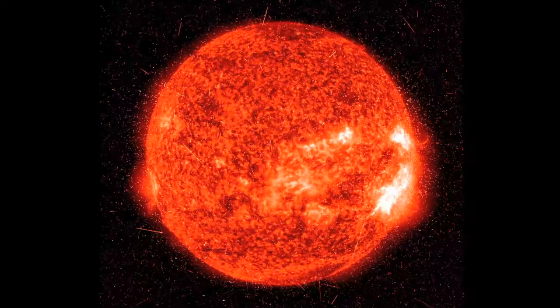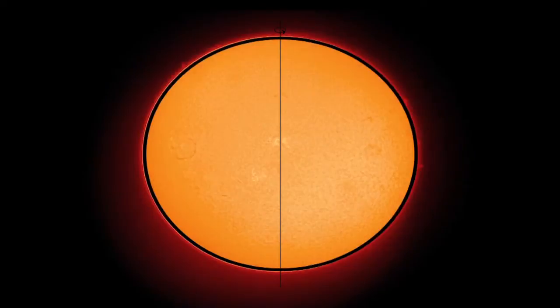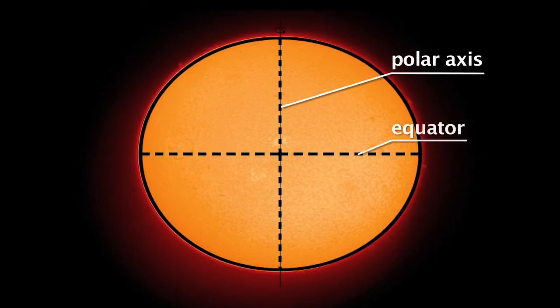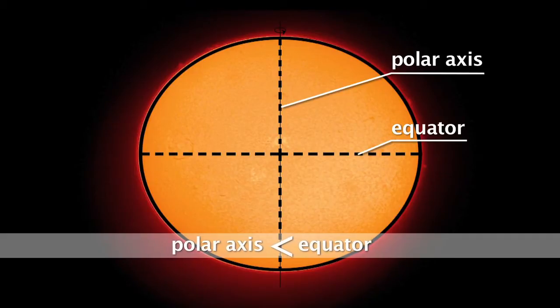As it is a fluid body rotating at a significant speed, it results in an oblateness that we will qualify as natural. Its diameter measures a few dozens of km less along its polar axis than at the equator.